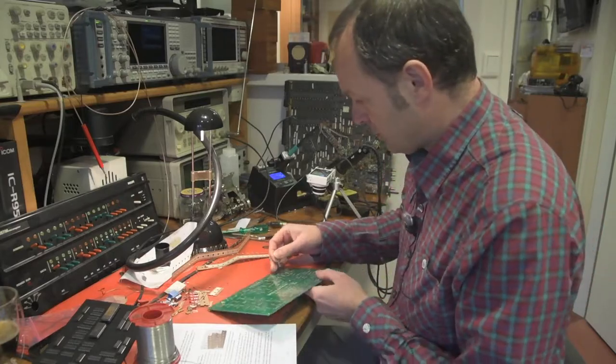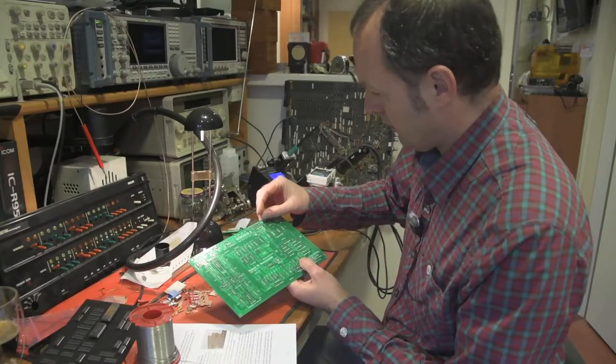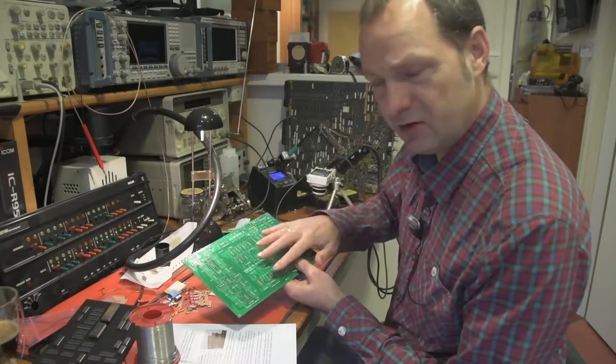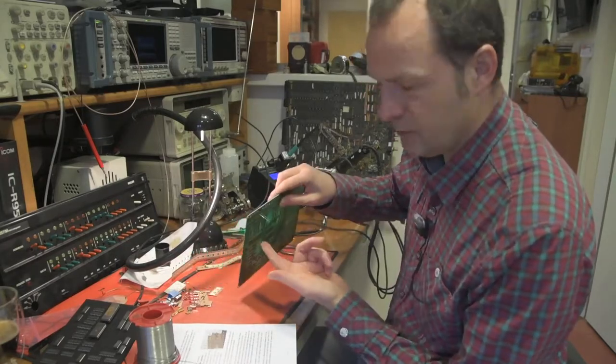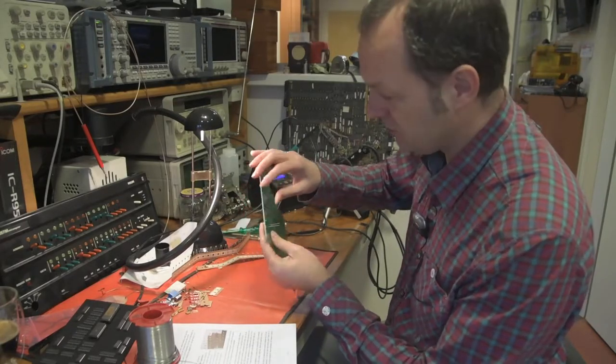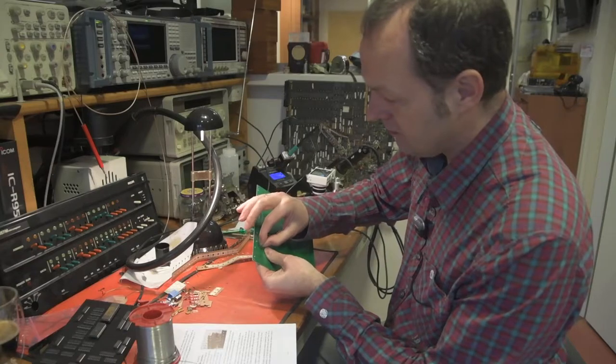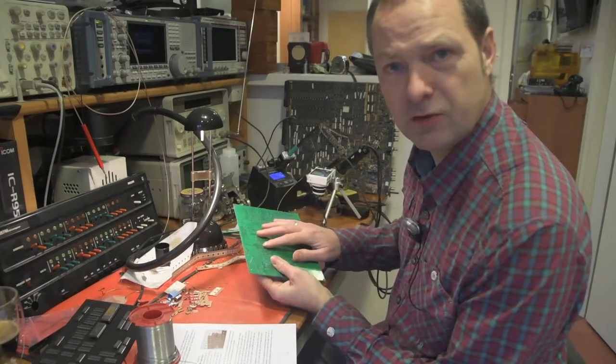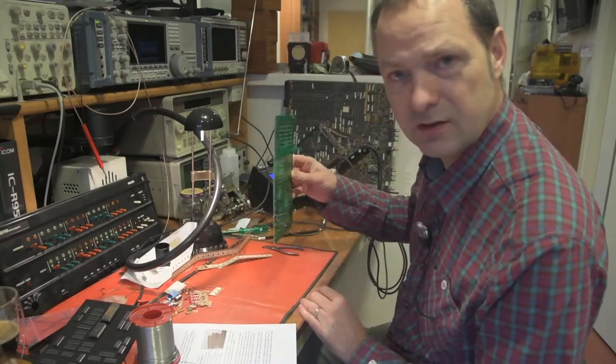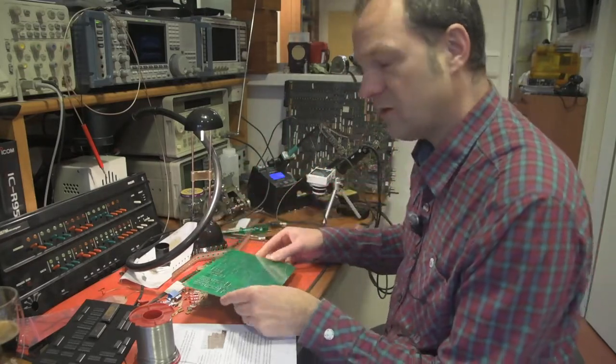So I insert the capacitor into the board. Orientation doesn't matter. Insert it on the front side, the printed side and we will solder it on the back side. What I normally do is I hold the component in place and slightly bend the pins on the print side, the soldering side so it stays put in the board. This makes it easy to solder.